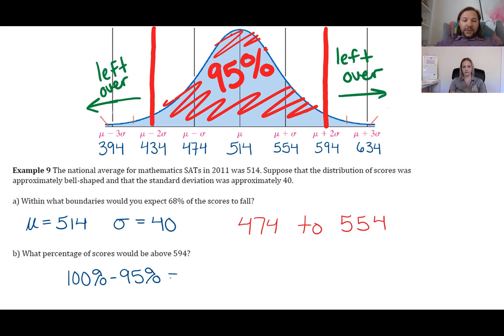So we're taking 100% minus 95%—that's the area of this region plus this region—and then divide by 2 because we want to exclude the values below 434. We keep this piece over here, which is 2.5%.